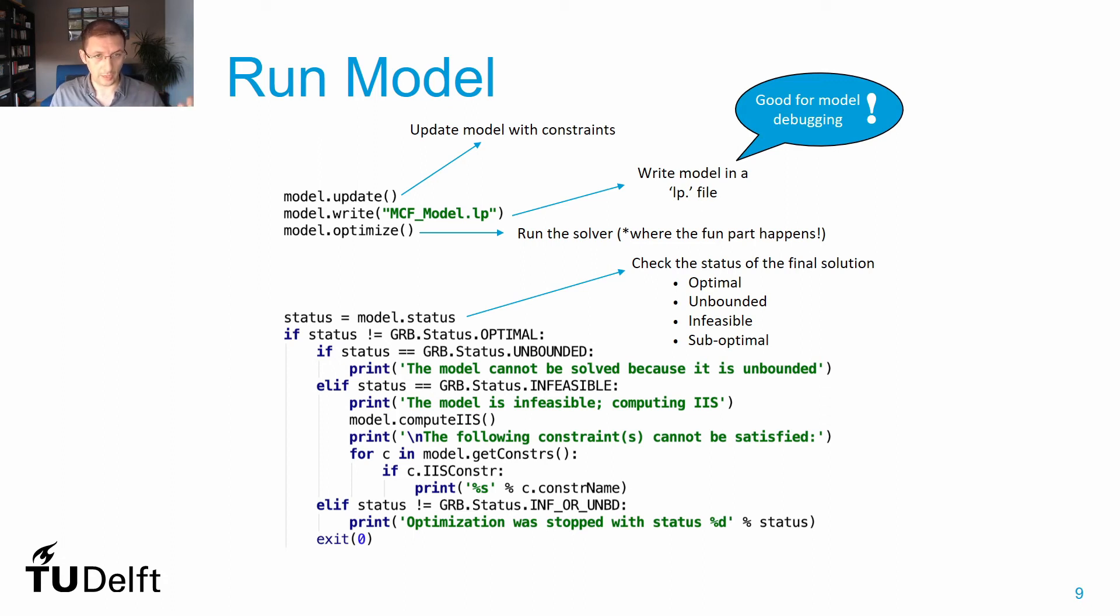The next step is to ask for a solution, so you write model.optimize. You ask Gurobi to provide the optimal solution, and this is where the fun part happens. It will take eventually a couple of seconds or even minutes for Gurobi to solve your problem depending on the size of your problem. Then you do have the solution and you can check, for instance, as I provide you a check if you have obtained an optimal solution, or if the problem was unbounded, or if it was infeasible, or if you obtained a suboptimal solution.